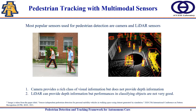Most popular sensors used for pedestrian detection are camera and LiDAR sensors. Camera provides a rich class of visual information but does not provide depth information. LiDAR can provide depth information but performance in classifying objects is not very good. Each sensor has its pros and cons, so we will try to use the maximum features of each sensor.